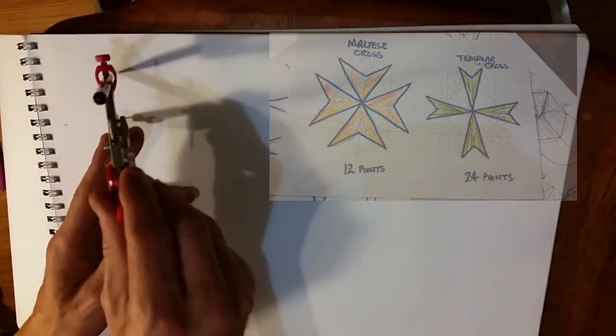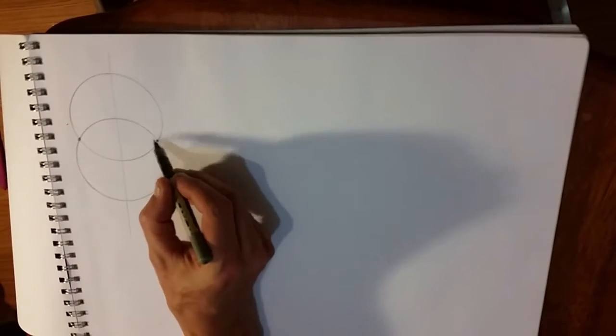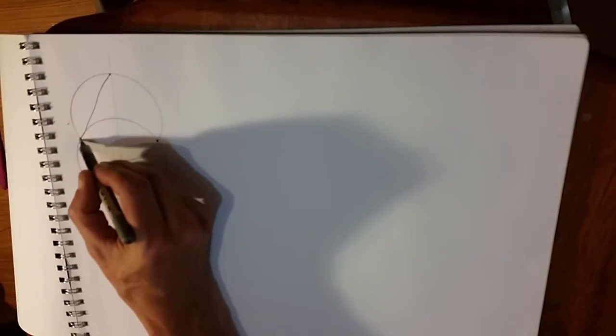Okay, so Vesica begins with a circle, with the second circle create the three points of an equilateral triangle.